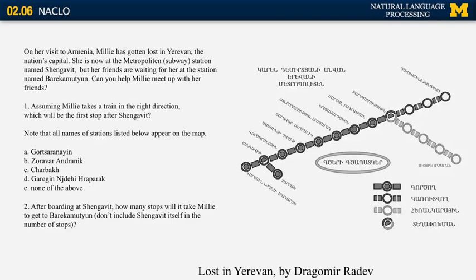Here's one about writing systems. Specifically, people have to figure out how the Armenian script works by looking at a map and the station names. Some of those names are given in English, so you can use your logical thinking to figure out where they appear on the map. Once you have figured out where they appear, you have to figure out what the different symbols mean, and use those symbols to figure out the names of the remaining stations.